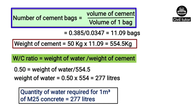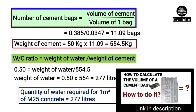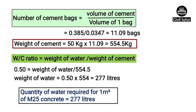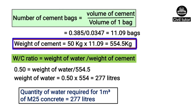Number of cement bags will be equal to volume of cement upon volume of 1 bag of cement. Volume of cement is 0.385 meter cube and volume of 1 bag of cement is 0.0347 meter cube, as shown in previous lectures. So on substituting, we get number of cement bags equal to 11.09 bags. Therefore, the weight of cement will be 50 kg multiplied by 11.09, which gives the weight of cement equal to 554.5 kg.